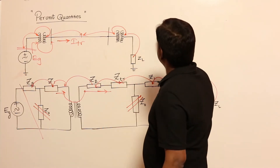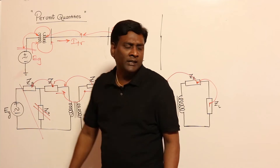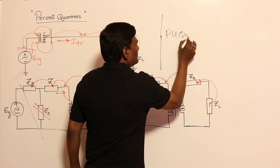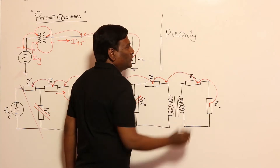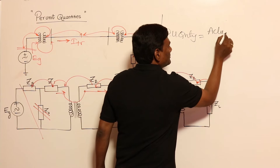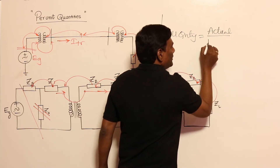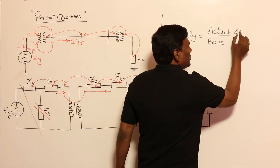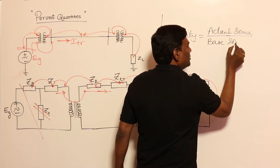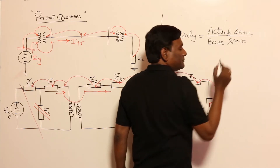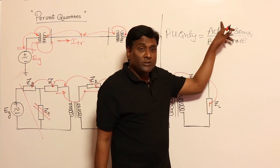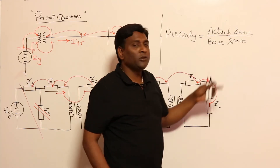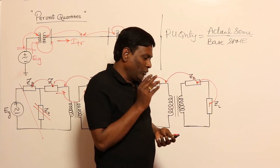Per unit quantity is defined as the actual value divided by the base value, both in the same unit. If the actual value is in volts, the base value must also be in volts; if in ohms, the base value must be in ohms.